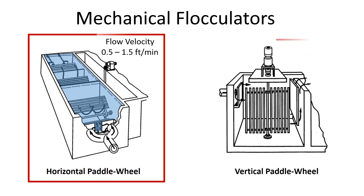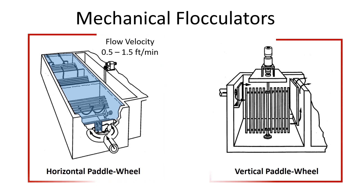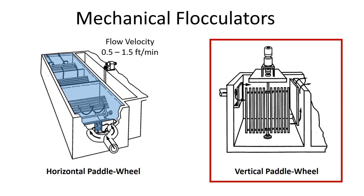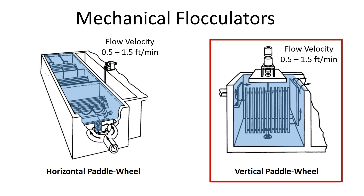The vertical paddle wheel has paddles that are vertical and rotates gently to provide the mixing energy, with water moving from one side to the other. Again, at a flow velocity of 0.5 to 1.5 feet per minute. We want this water to move through very slowly with varied mixing energy in each of the three chambers.